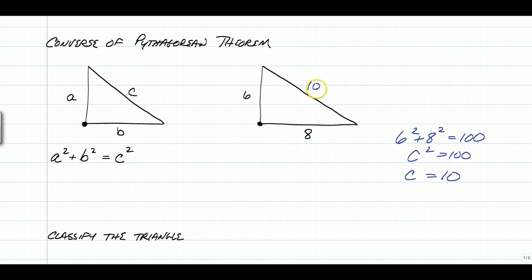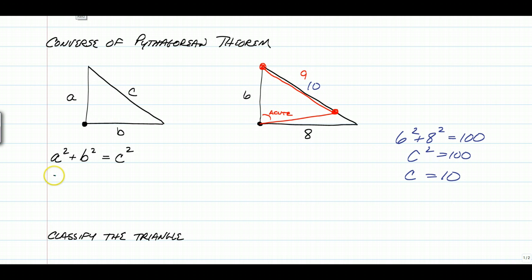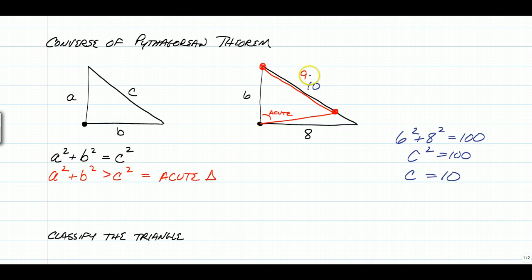What happens if the hypotenuse wasn't 10 — say it was shorter, like 9? The sides would have to angle inward, and the angle at the top just got smaller — it's now acute. So if a² + b² is greater than c², you're going to have an acute triangle. For example, 6² + 8² gives 100, and 9² is 81 — 100 is bigger than 81, which is why it's acute.